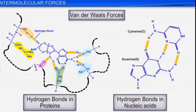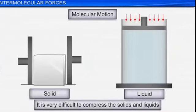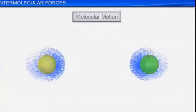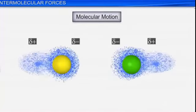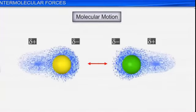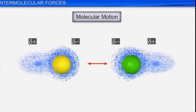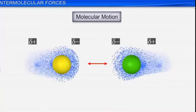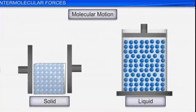Have you ever thought about why it is so difficult to compress solids and liquids? Why can't we compress a solid? The main reason is intermolecular forces. Because of these forces, we cannot compress them. In molecular motion, the force magnitude rapidly increases when molecules come close to each other.